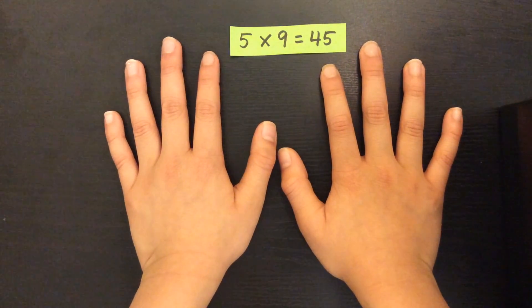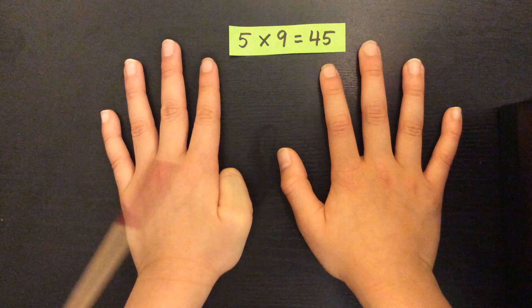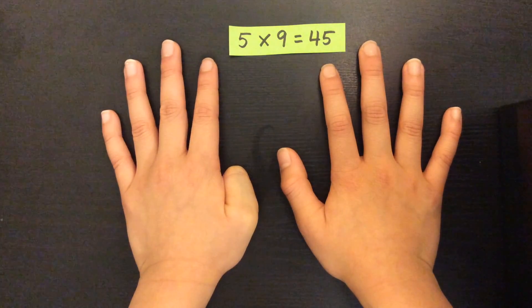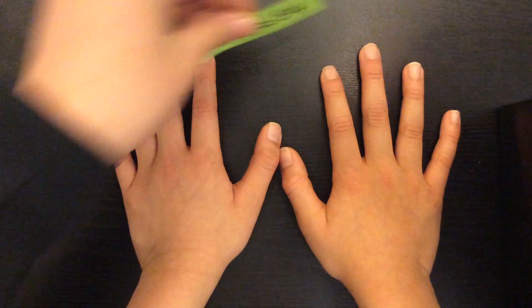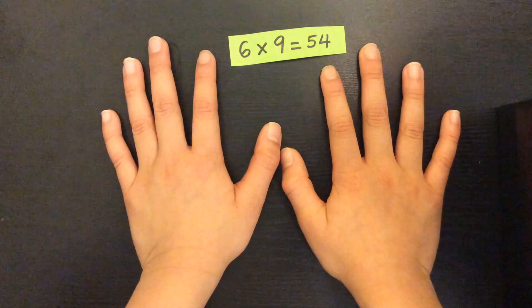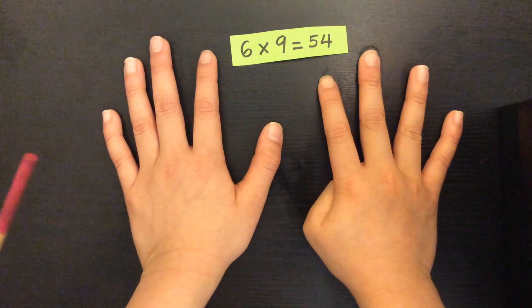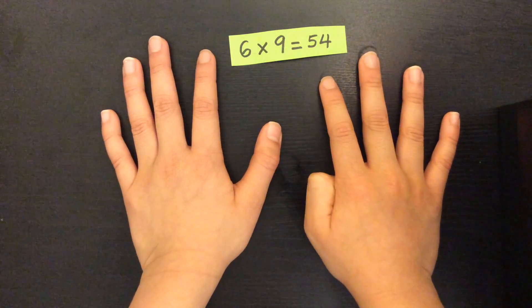Five times nine. I have four and five. That's forty-five. Six times nine. I have five and four. That's fifty-four.